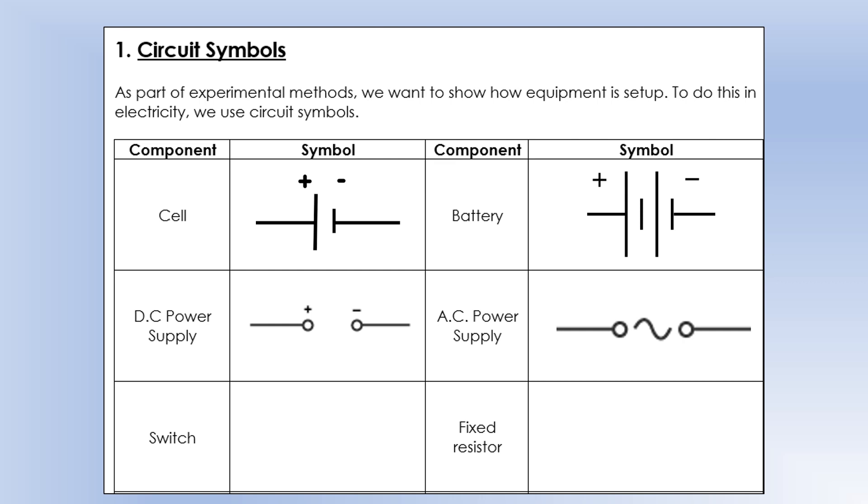Speaking of switching, a switch in a circuit looks like this. So this is showing an open switch, or a switch that doesn't allow current. And we also use a lot of these in circuitry. They're called resistors, or to be more specific, fixed resistors.